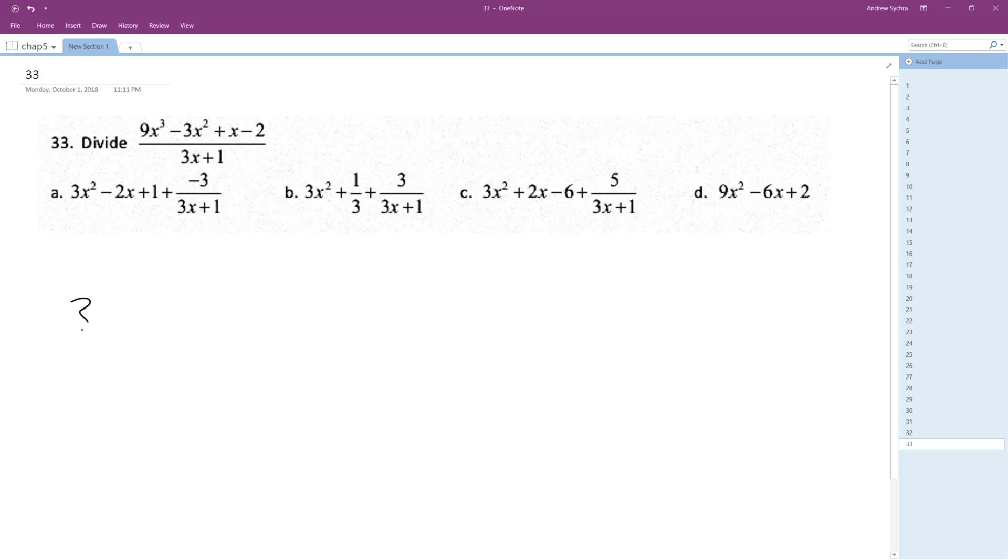So to do that, we're going to take 3x plus 1 and do polynomial division. We'll have 9x cubed minus 3x squared plus x minus 2.